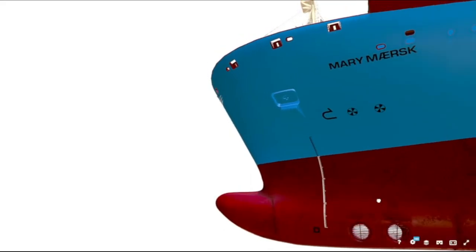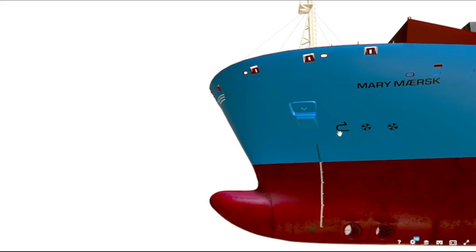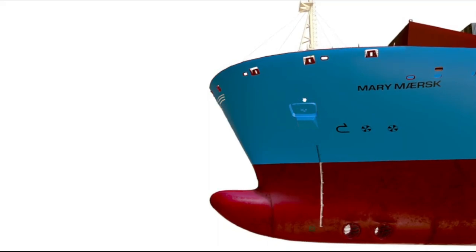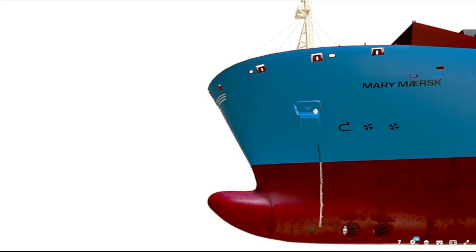Bow thrusters are provided for ease of maneuver. This indicates that there is a bulbous bow here. Not every ship has a bulbous bow — ice class ships don't have a bulbous bow, or they have one but it is extra-strengthened. These two indicate that there is a stern thruster over there. This is the name of the ship — Maersk Maersk. These are the fairleads, through which the mooring lines are passed to the pier and to tugboats for assistance.